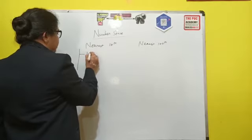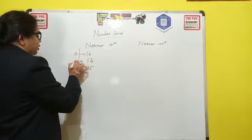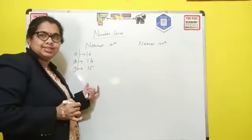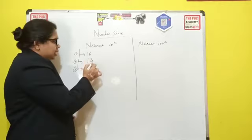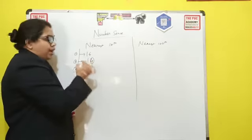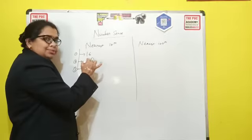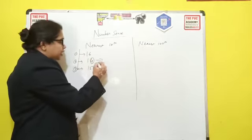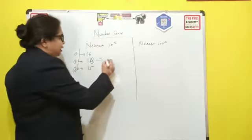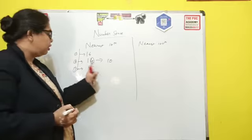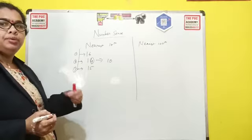For example: 16, 14, and 15. Three rules are there — one, two, and three. Rule number one: if on the unit place the number is below 5 — for example, for number 14, on the unit place the number is 4, which is below 5 — so your nearest tenth will be the lesser number, which is 10. The nearest tenth will always be less than that number, or the previous tenth you can say.